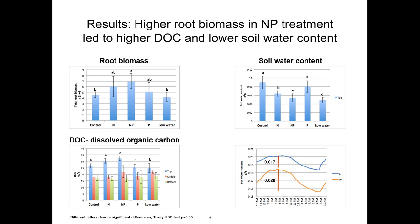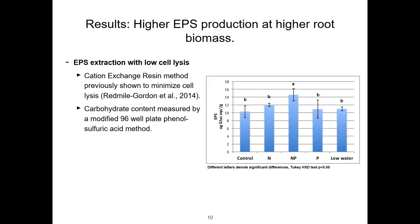So how do these soil parameters, affected by root biomass, affect EPS production? First, I want to make the point that I extracted EPS from the soil using the cation exchange resin method, which has been previously shown to minimize cell lysis, so we can be sure that the polysaccharide I'm looking at is extracellular and not coming from any intracellular source.